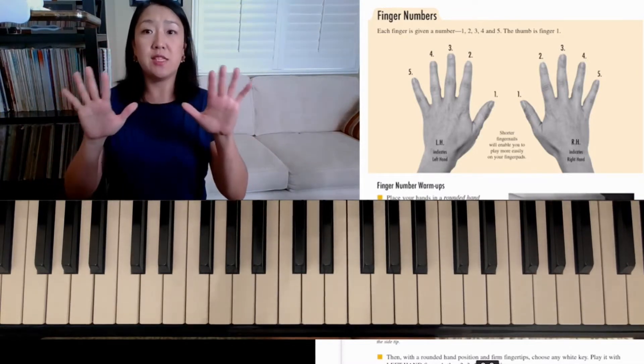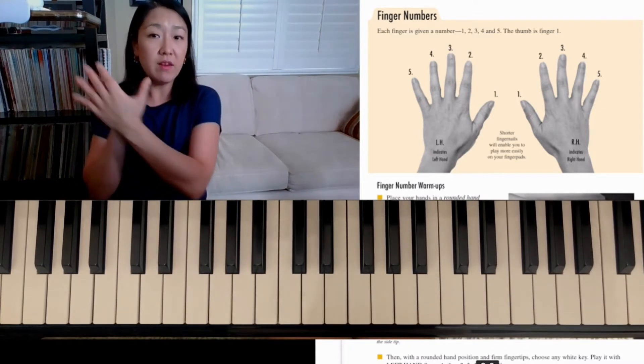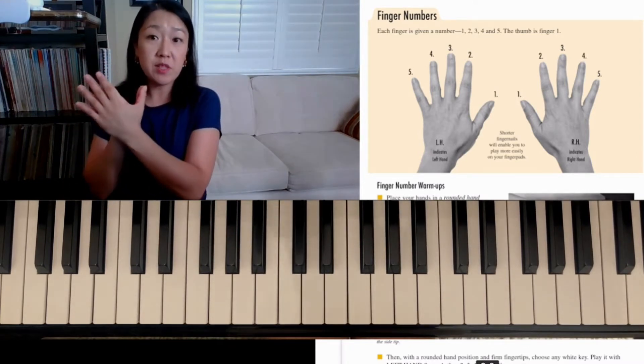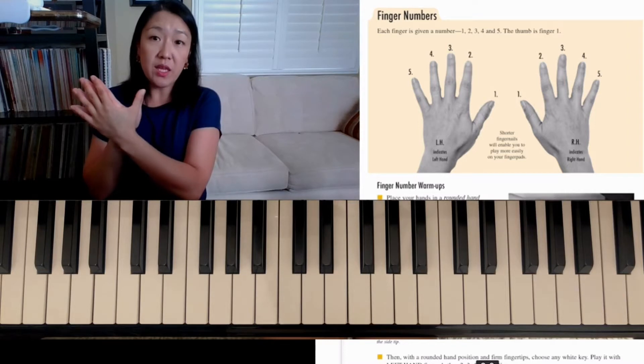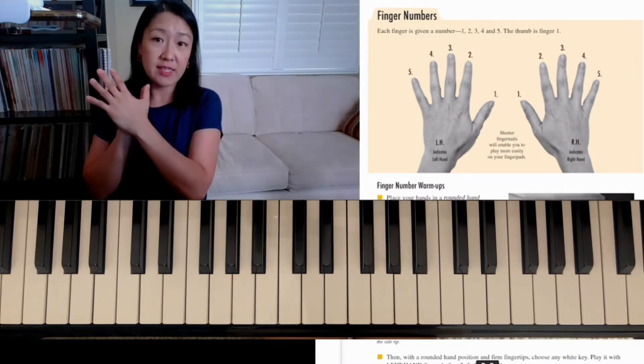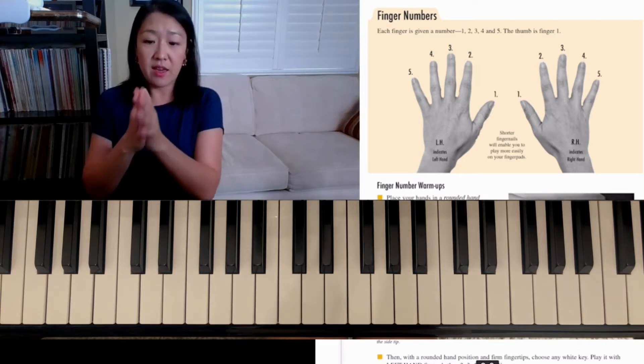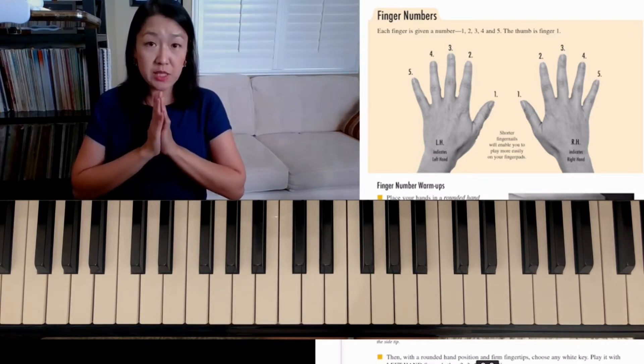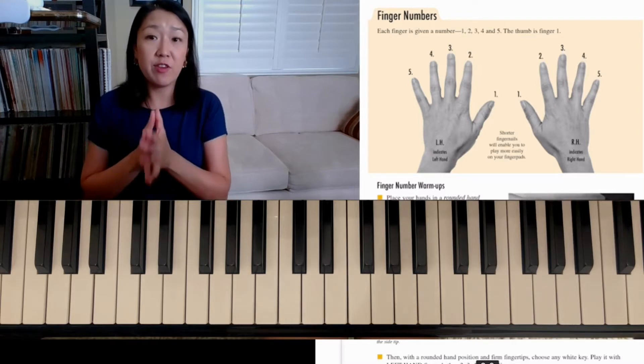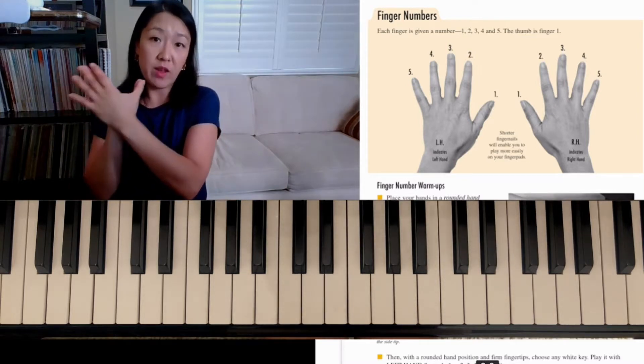So if you look at your hands, put them up and then put them together and the finger numbers or the fingering will be 1, 2, 3, 4, 5 like this. And I know if you play string instruments or guitar, the fingering is slightly different. For piano, we have 1 at the thumb.